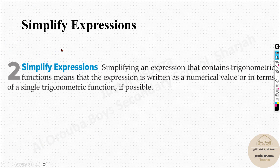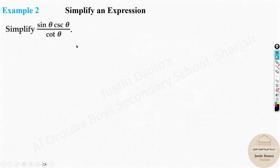Now we move on to simplifying expressions. We need to know the formulas, substitute them, and simplify as much as possible. There is no direct shortcut — you must work through it. A calculator shortcut exists only if you know the answer options: substitute a value like θ = 15° and check which option matches.